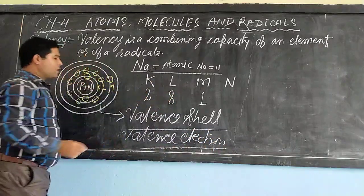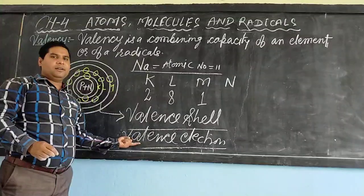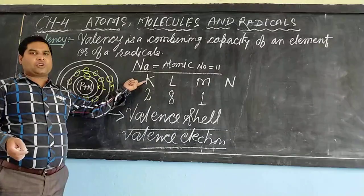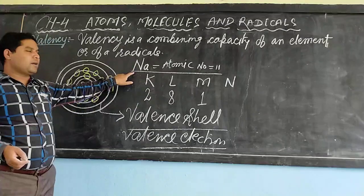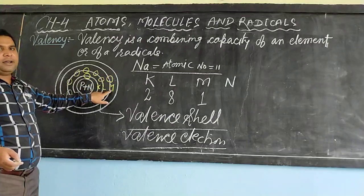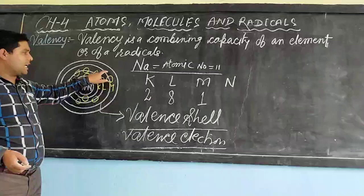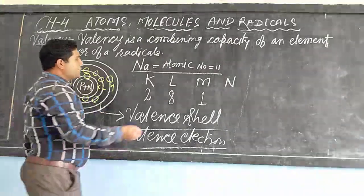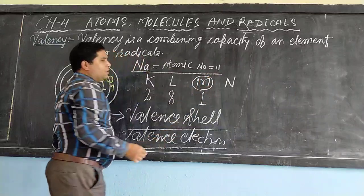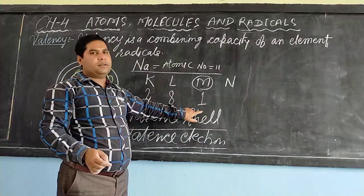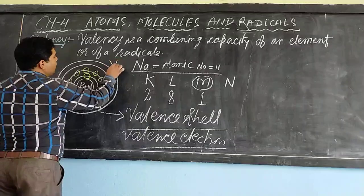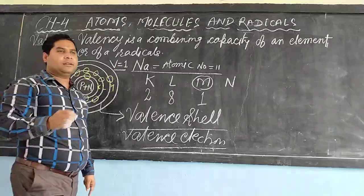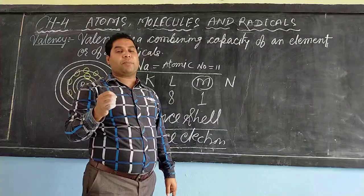So dear students, now you know what is meant by the valence shell and the valence electron. In each different element's atomic structure, the valence shell will be different. But in the case of sodium, the valence shell is M, and the valence electron is the electron present in the M shell — which is 1. So the valency of sodium is 1.